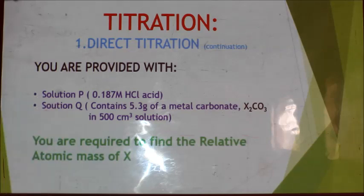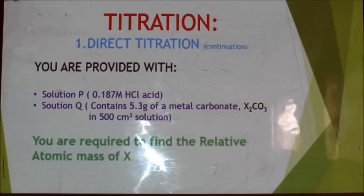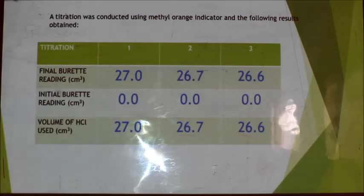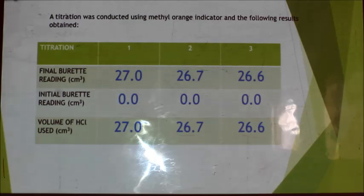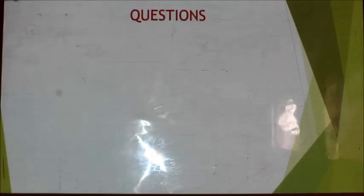You are provided with two solutions: solution P and solution Q. Solution P is 0.187 molar hydrochloric acid. Solution Q contains 5.3 grams of a certain metal carbonate dissolved in 500 cm³ of distilled water. The objective of this experiment is to find the relative atomic mass of X. A titration experiment was conducted using methyl orange as the indicator, and the table shows the results obtained. The table has been completed using one decimal place and correct arithmetic.